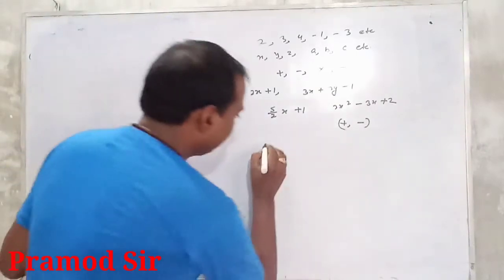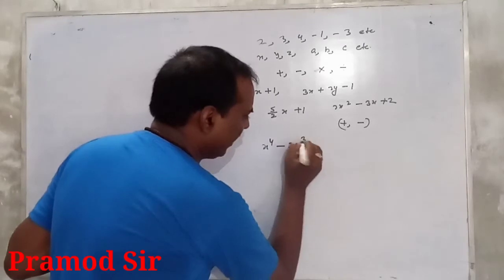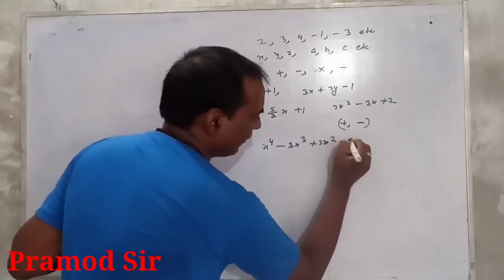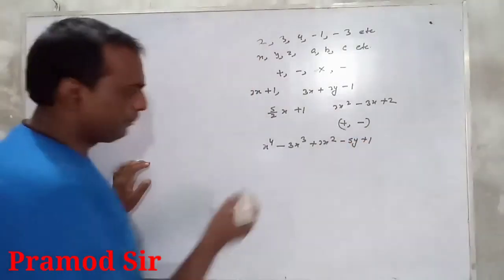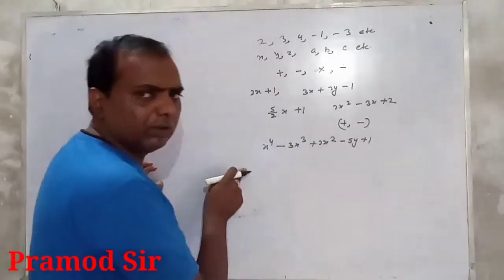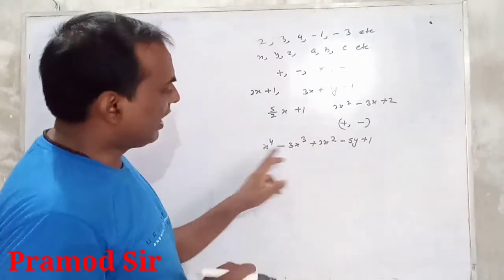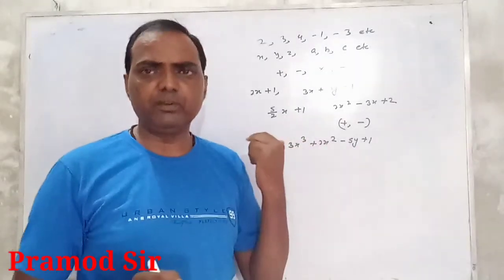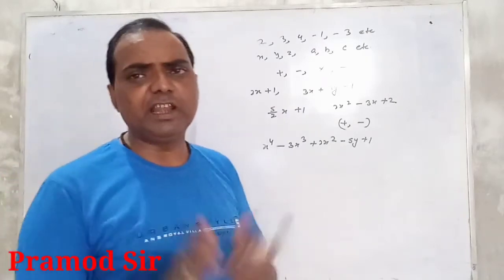Similarly, you can take x⁴ − 3x³ + 2x² − 5y + 1. Here minus, plus, minus, plus are used — four times — so one, two, three, four, five: five terms. In this way, hum algebraic expression ke terms ko determine kar sakte hain.